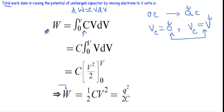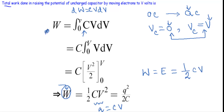Evaluating the integral, W = ½CV². Since q = CV, substituting gives W = q²/(2C). So the energy stored in the capacitor equals ½CV², or equivalently Q²/(2C). This work done is stored in the form of electrostatic energy in the capacitor.